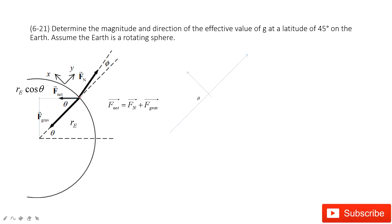We need to find the effective value of g, which means we need to look at the normal force, because the normal force equals mass times the effective g. Now let's see what forces act on this particle. First of all, we have the normal force and gravity. Because this particle is located at 45 degrees, you can see the normal force and gravity are not along the same line.